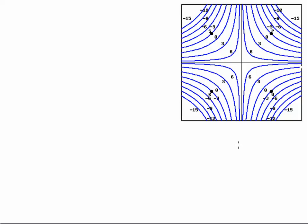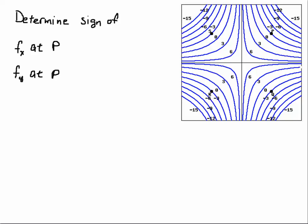Hello students. In this video we're going to determine whether or not a partial derivative is positive or negative based on the geometric viewpoint of its contour map. We're going to look at the point P, which is located here in the first quadrant, the upper right, and we want to know if the partial of F with respect to X at P is positive or negative, and if the partial with respect to Y at P is positive or negative.